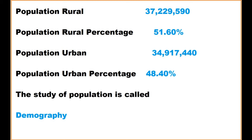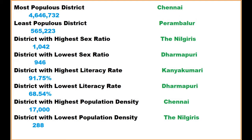The study of population is called demography. The most populous district is Chennai, with about 46,46,732. The least populous district is Perambalur with just 5,65,223. The district with the highest sex ratio is 1042, which is Nilgiris district.